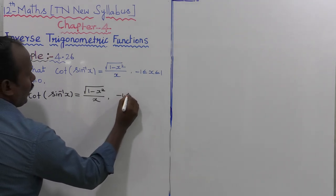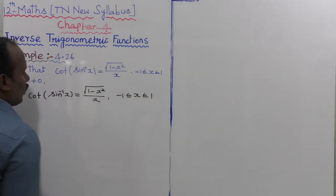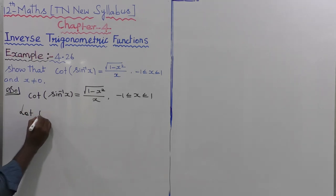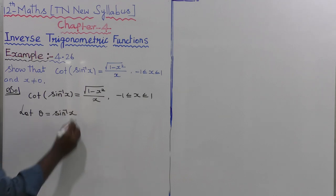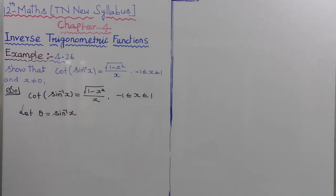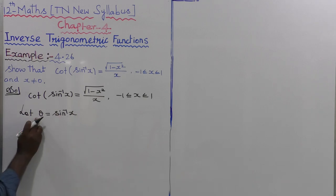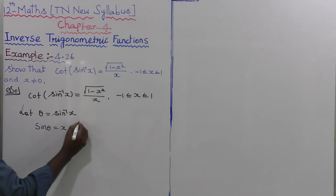Now, minus 1 is less than or equal to x is less than or equal to 1. First of all, let us consider theta is equal to sin inverse of x. Then, moving sin theta to the left side gives sin theta is equal to x.